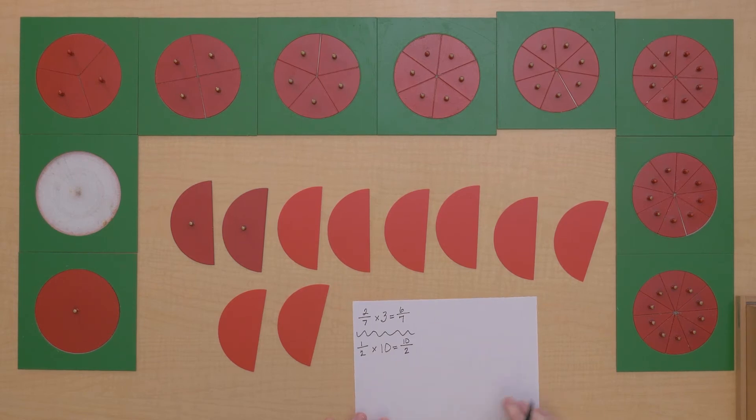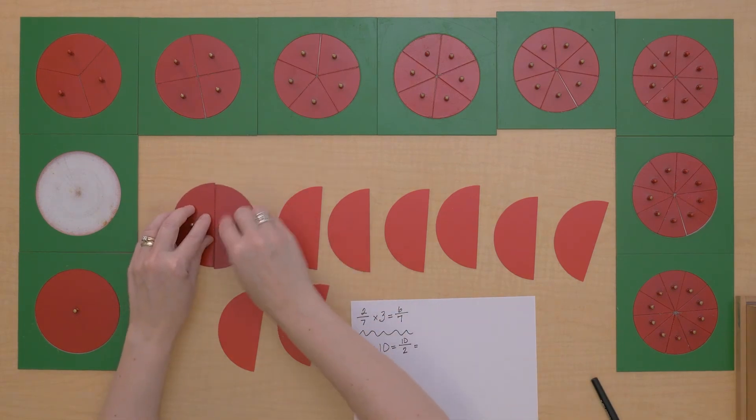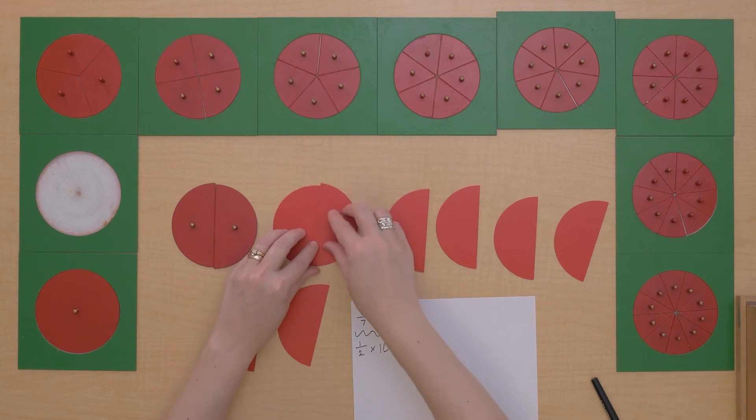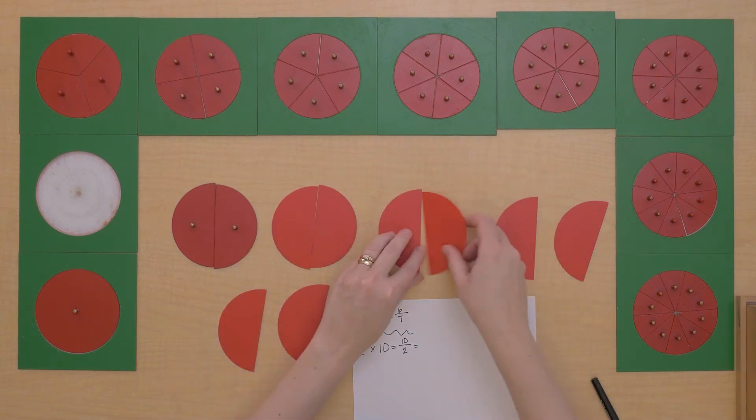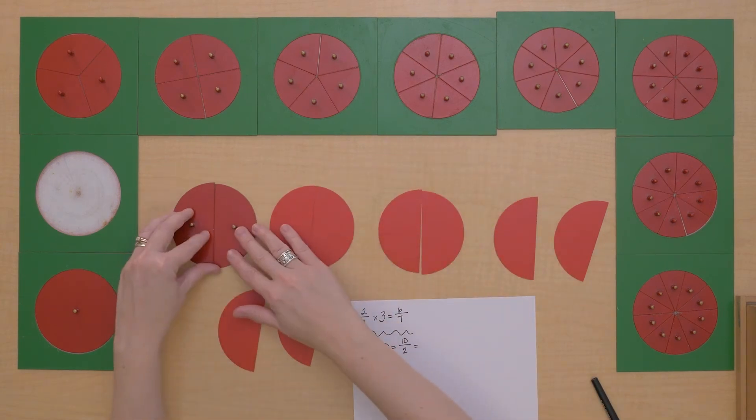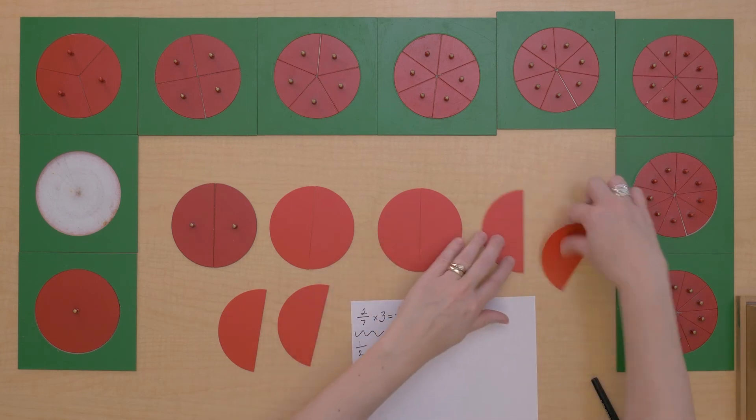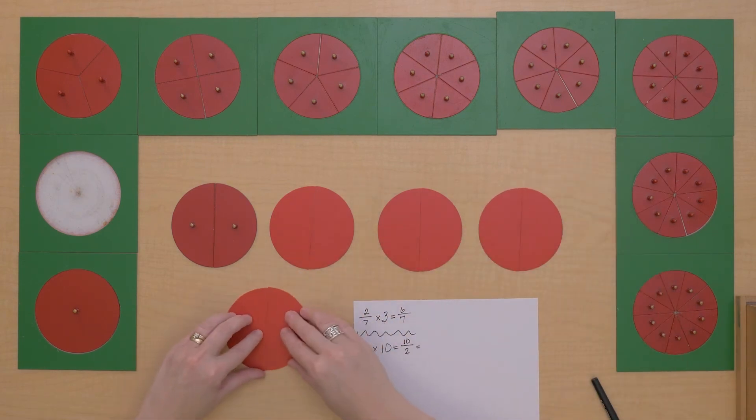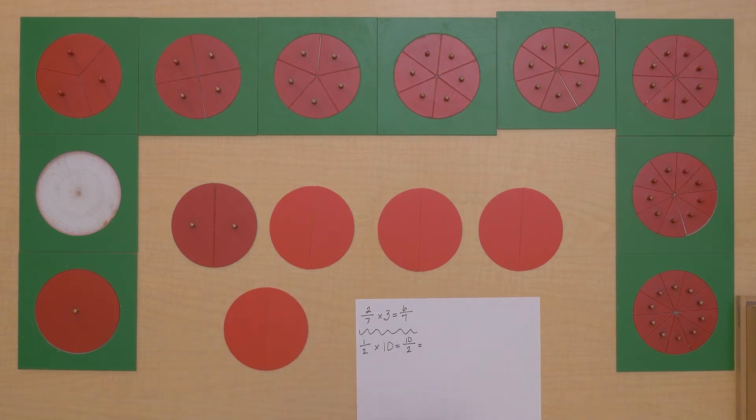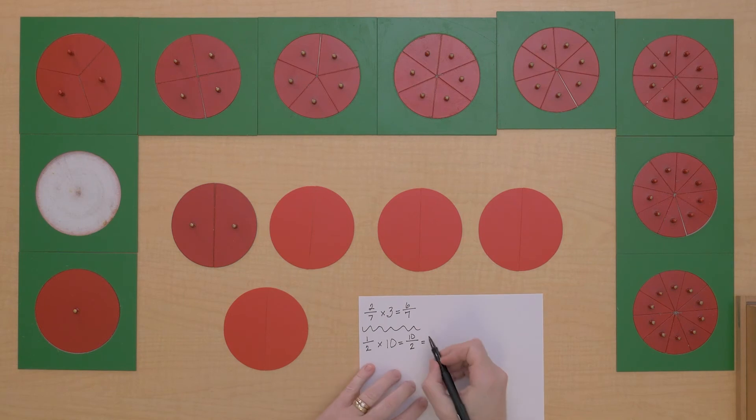Which we could write like that. But look what else we could do. I made a whole. I made another whole. Here's another whole. 1/2 times 10 equals 10 halves. But it also equals 5 wholes, 5 units.